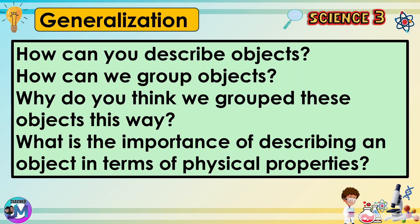How can you describe objects? How can we group objects? Why do you think we grouped these objects this way? What is the importance of describing an object in terms of physical properties?